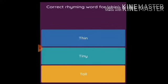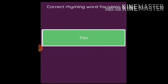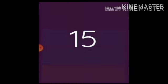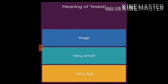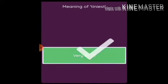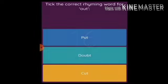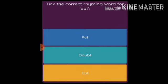Find the correct rhyming word for 'chin'. The options are thin, tiny, and tall — the answer will be 'thin'. The meaning of 'tiniest': huge, very small, or very big — the answer will be 'very small'. Find the correct rhyming word for 'out': put, doubt, cut — the answer will be 'doubt'.